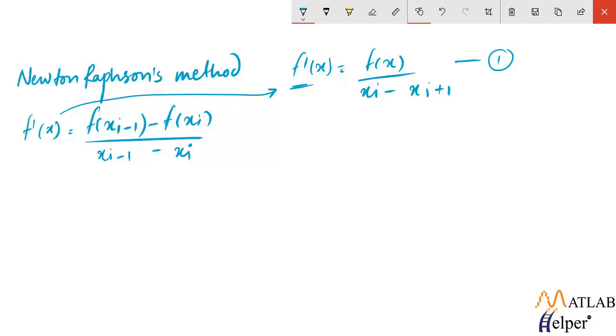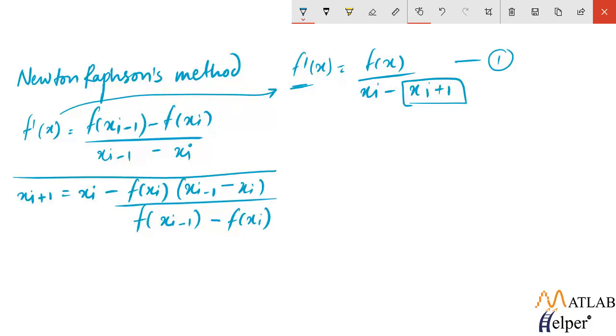Now as we do that we get xi+1. So this is the formula that is used to find out the next root estimate and this is used in the secant method.